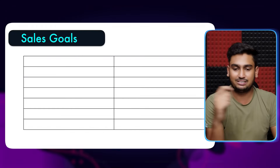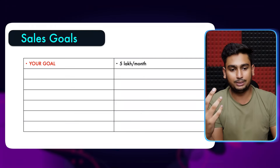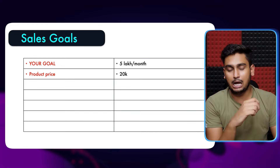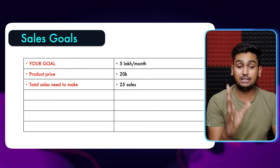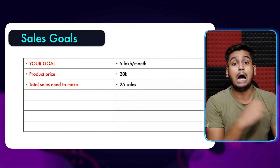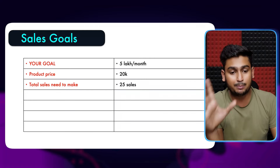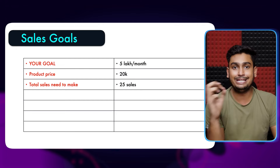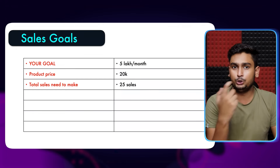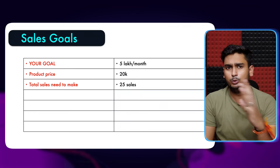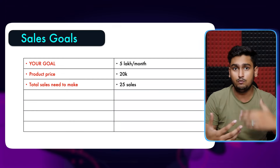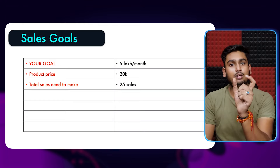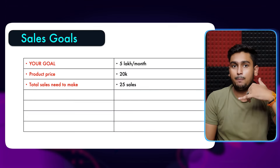Let's understand our sales goals with an example. Say our goal right now is $50,000 per month, and your product price is $20,000. If you want to achieve a goal of $50,000 per month, you will have to make 25 sales in a month. Now the question comes: how many leads do I need to make one sale, and how many closing calls will I need to close this product?